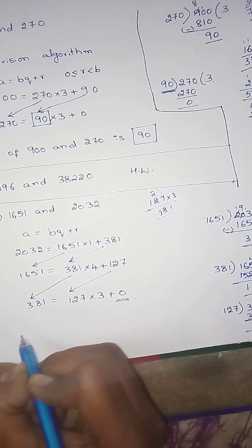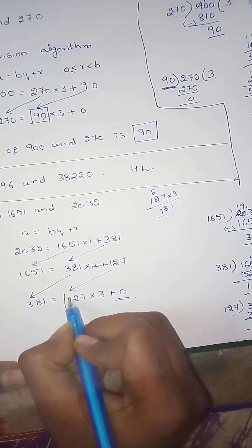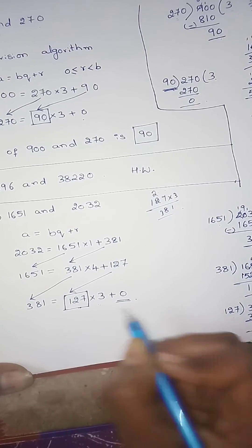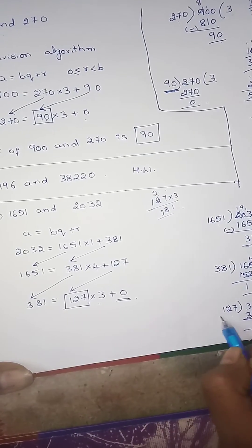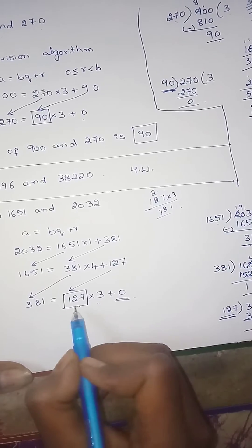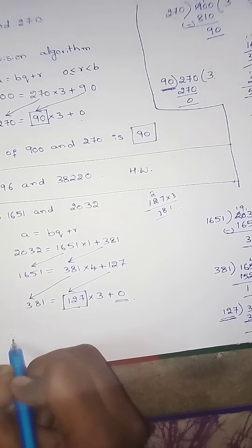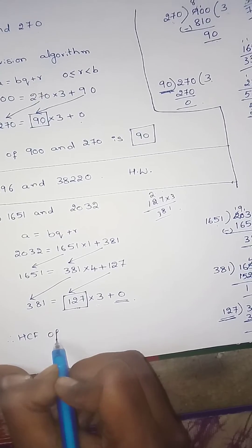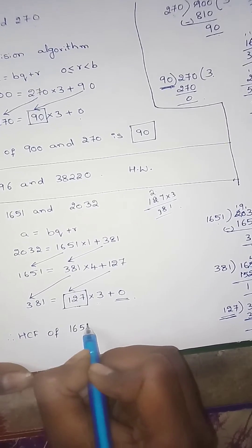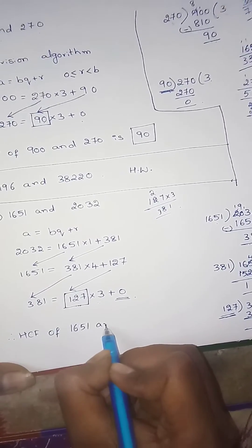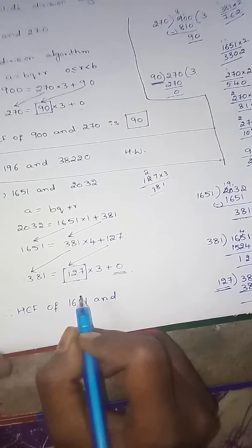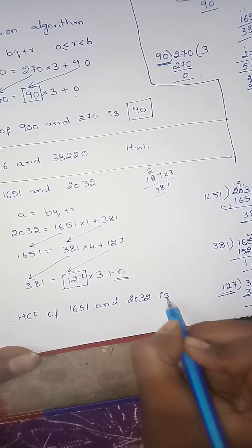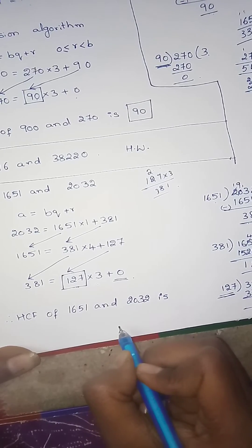Therefore, what is the value? This is the answer. Therefore, HCF of 1651 and 2032 is 127.